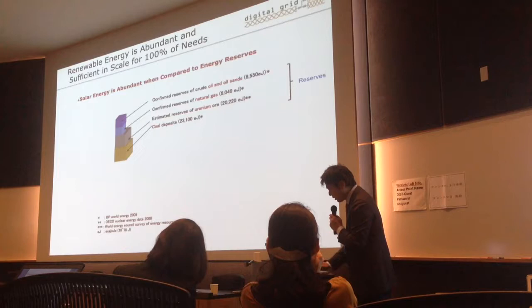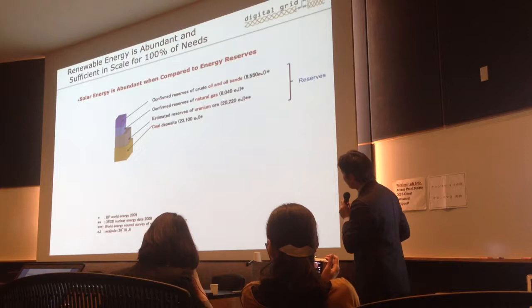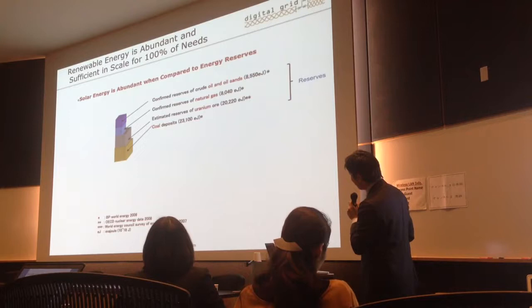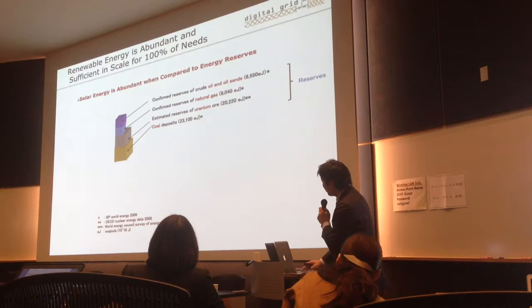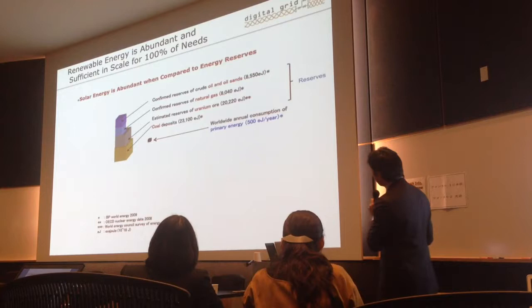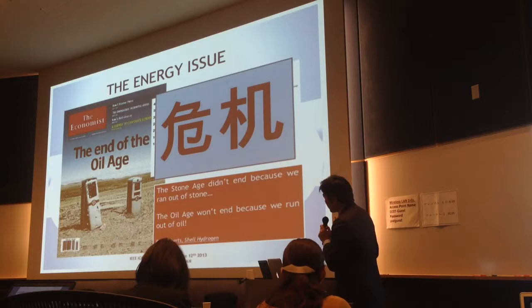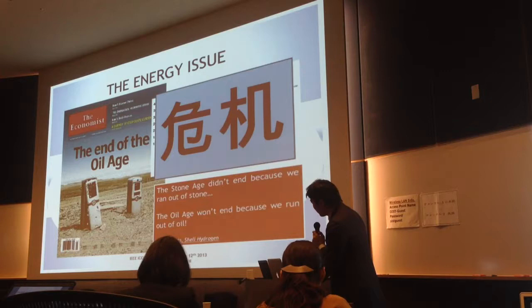This shows the potential resources of oil, oil sands, natural gas, marine, and coal — these are the confirmed resource sizes. On the other hand, the worldwide annual consumption of primary energy is this size. And if we think about renewable energy, solar energy is one of the most promising energies in the coming decades.